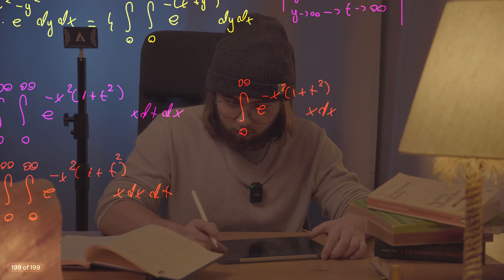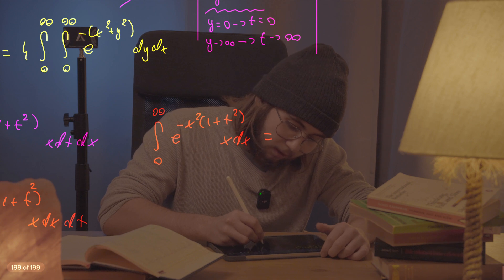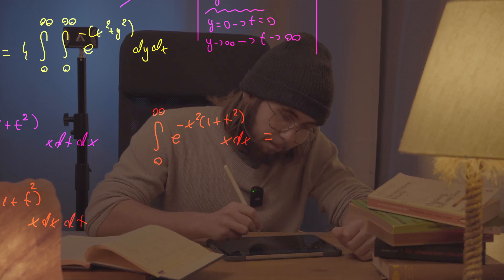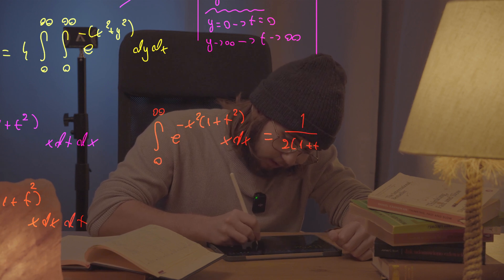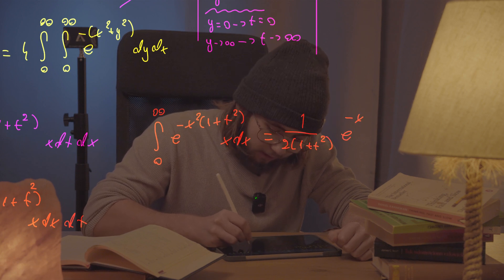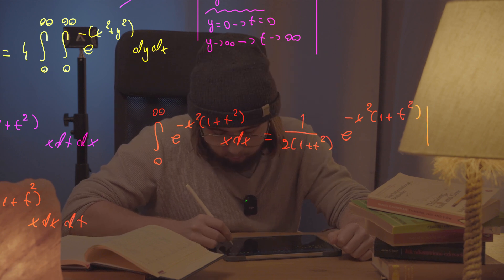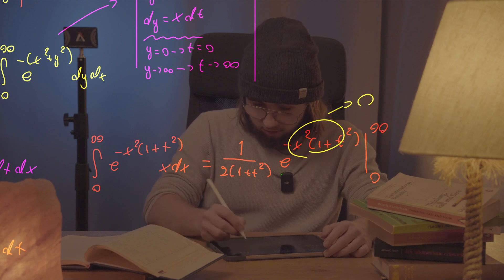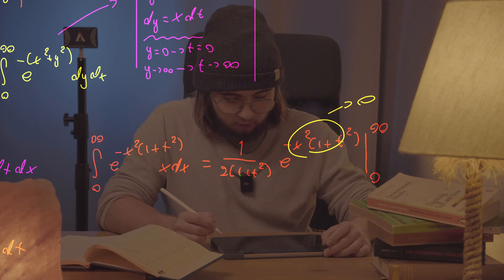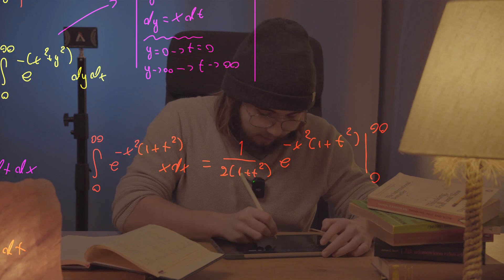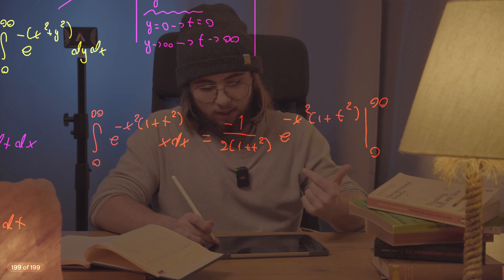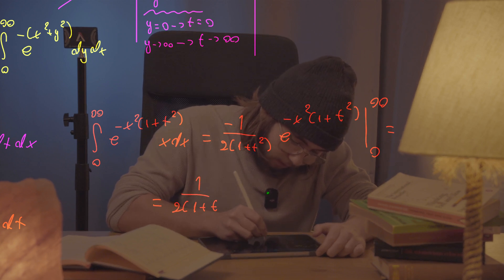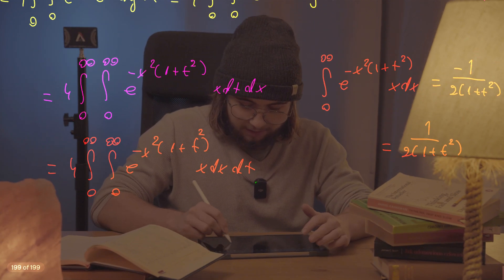For the inner integral, set u equal to negative x squared times (1 plus t squared). The anti-derivative evaluates to one over 2(1 plus t squared) times e to the negative x squared (1 plus t squared), evaluated from zero to infinity. As x goes to infinity, the exponential goes to zero; at x equals zero it gives one. With the negative sign, this becomes negative one, so the inner integral equals 1 over 2(1 plus t squared).